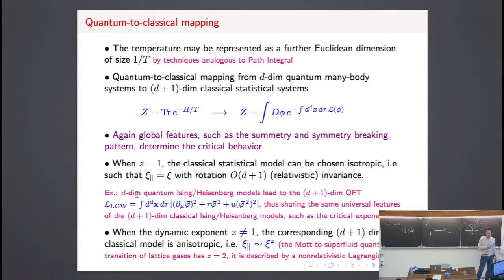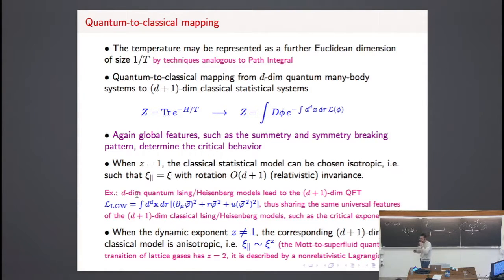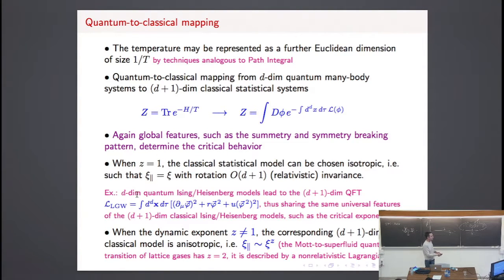With z equal to one we can have transitions — but for example the Mott-to-superfluid quantum transition has z equal to two. You can have different values of z.